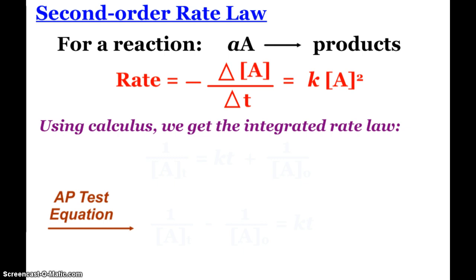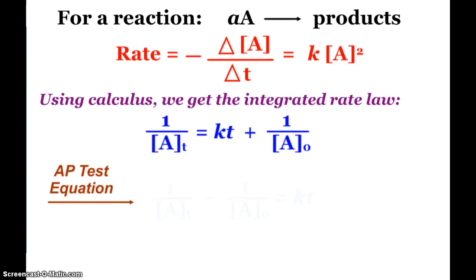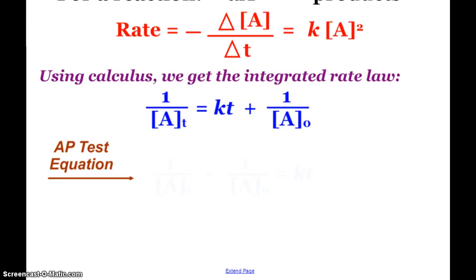For a second order, we know that our rate is equal to k times the concentration squared. So using calculus, we get this integrated rate law. And on the AP exam, on your formula sheet, it takes that form, same thing, just rearranged. So 1 over the concentration at time t minus 1 over the initial concentration is going to equal kt.